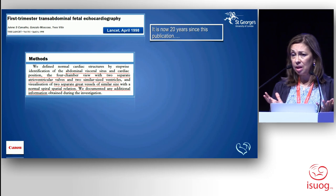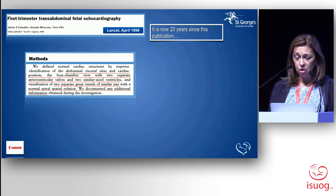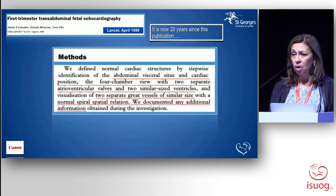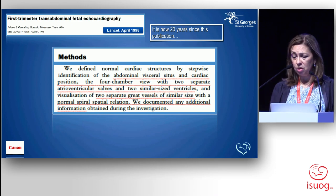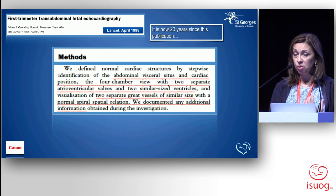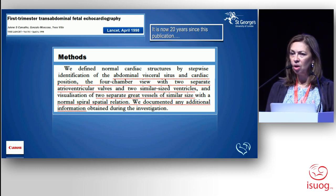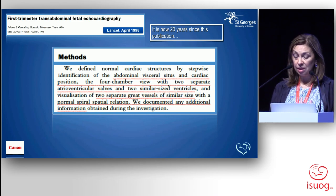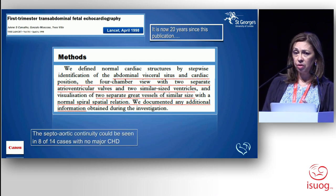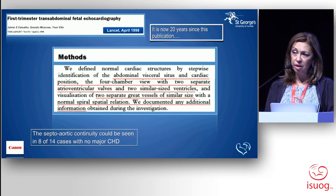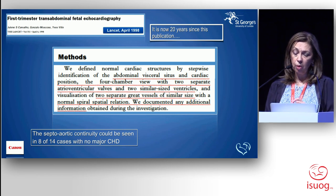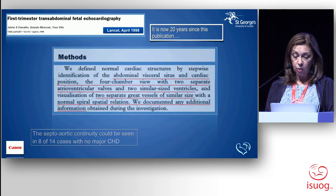Looking back at that publication, it was interesting to see how much 20 years ago we set as the establishment for normal fetal echocardiography: establishing abdominal situs, cardiac position, four-chamber view, two valves, atrioventricular valves, two similar-sized ventricles, seeing the two great arteries in the normal spatial relationship, and documenting any additional features. So 20 years ago we were quite demanding already before we could say a scan was normal at less than 14 weeks gestation. We were also looking at septo-aortic continuity, because if you see that, you exclude tetralogy of Fallot.